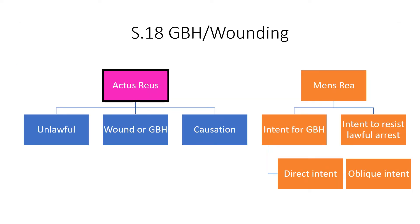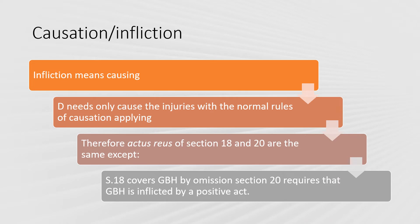We do need to consider the element of causation because the Act is worded slightly differently to section 20 — it uses 'inflict GBH' or 'inflict a wound'. Infliction simply means causing, so the normal rules of causation apply: the 'but for' test, multiple causes, and legal causation. The actus reus of section 18 and section 20 are the same, except that section 18 covers GBH by omission, whereas section 20 requires GBH inflicted by a positive act.